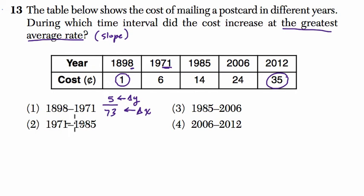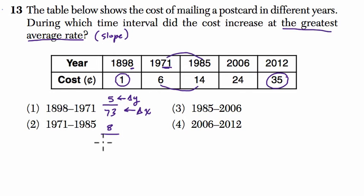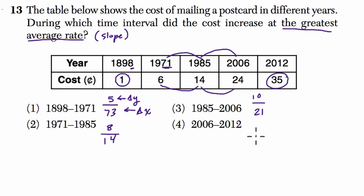The next one, 1971 to 1985, we're going up from 6 to 14 cents — that's 8 cents over 14 years. Then 1985 to 2006, the cost goes up 10 cents over 21 years. And then 2006 to 2012, it's only 6 years but the cost is going up 11 cents.